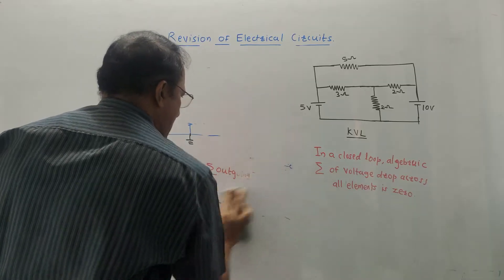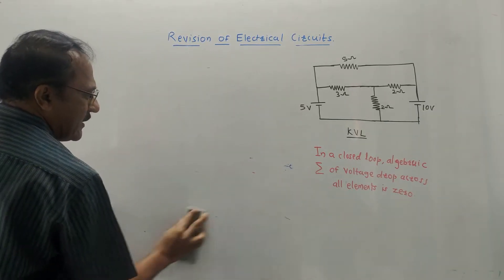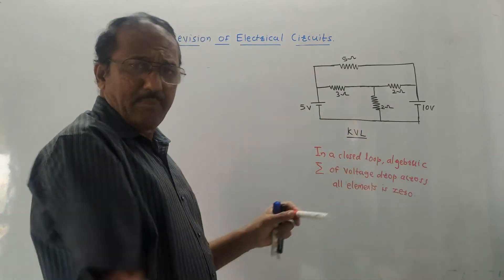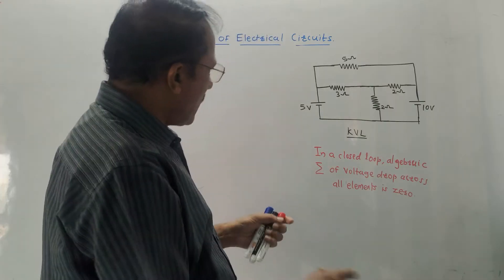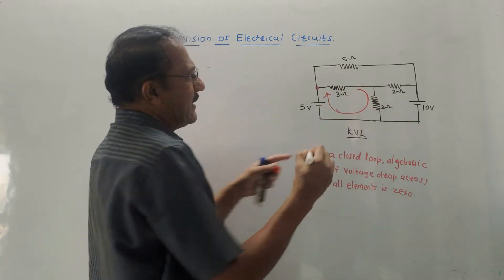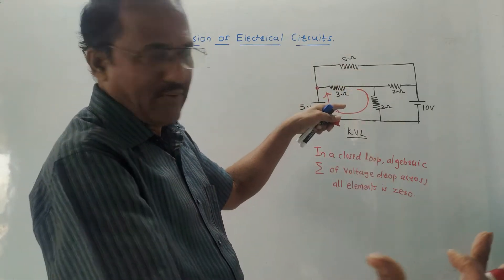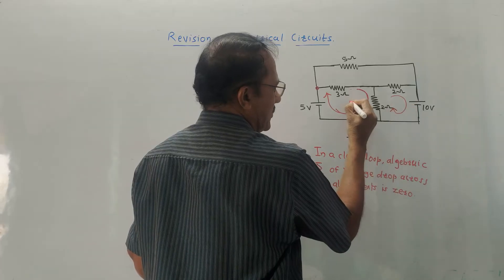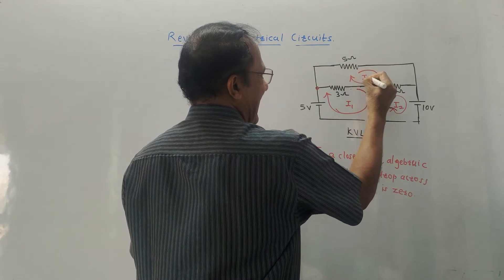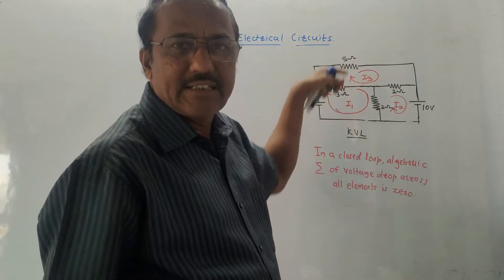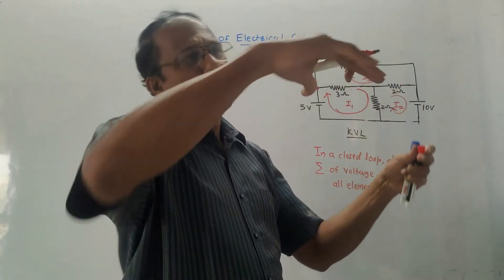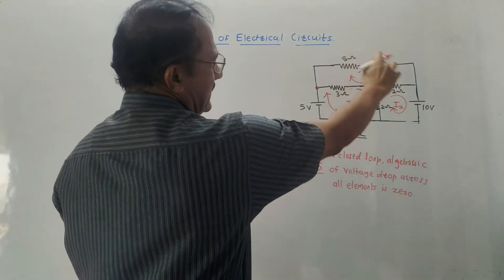Next is KVL, also known as mesh analysis or loop analysis. In the given diagram there are two voltage sources and three loops. When you start from any point, move around and come back to the same point, that is one loop. Loop currents are I1, I2, and I3. I assumed clockwise direction — it is not a rule, but assuming all currents clockwise makes calculations very easy.